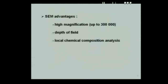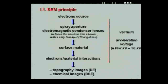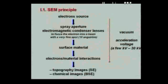In SEM, the source is an electron source; this beam passes through condenser lenses to focus the electron beam into a very fine spot to increase the resolution. The beam then interacts with the surface material, and from this interaction you can detect secondary electrons — which give you a topography image — or backscattered electrons, which give a chemical composition image. For SEM, we usually use an acceleration voltage from a few kilovolts to about 30 kilovolts.